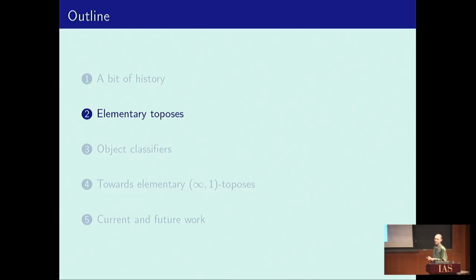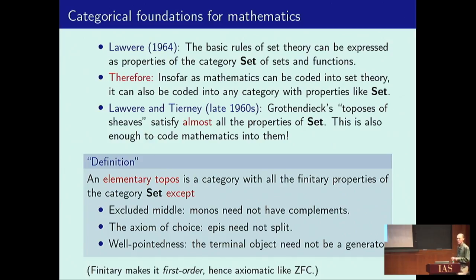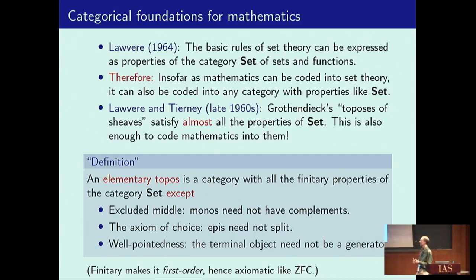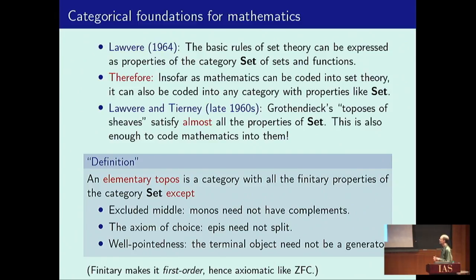What is an elementary infinity topos? First, what is an elementary topos — that's the one-categorical version. The history goes back to the 1960s. Bill Lawvere realized somewhere in 1964 that the basic rules of set theory, like in ZFC, can be expressed as properties of the category of sets and functions.